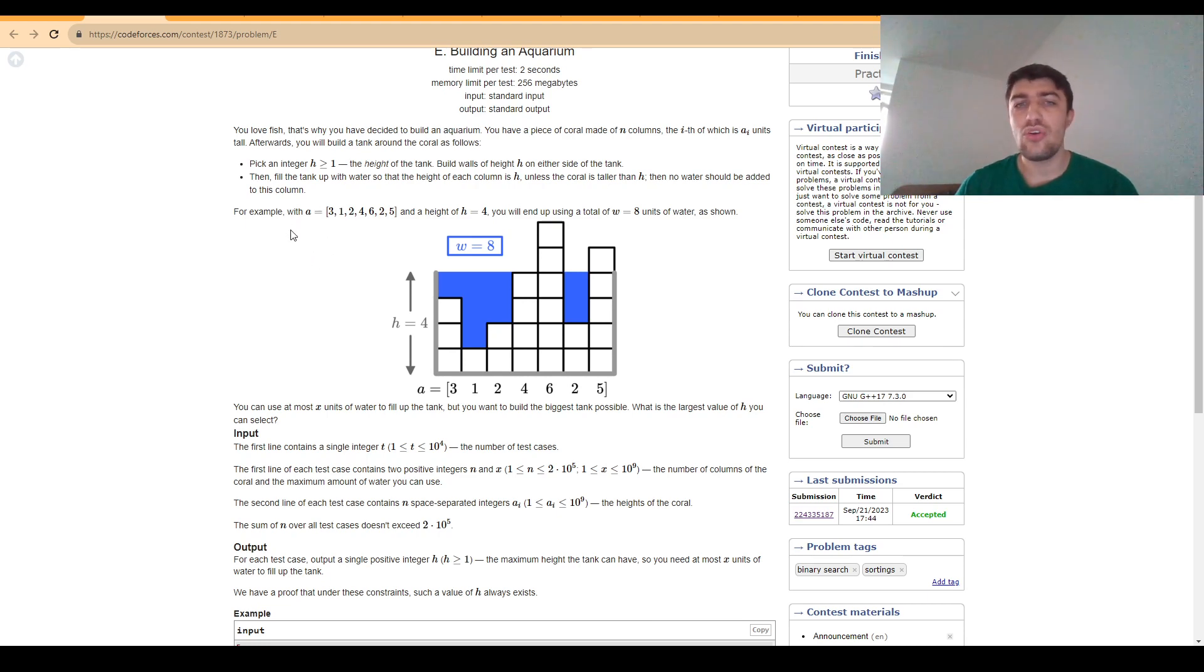Because on one hand it's easy to implement and on the other hand we can check for each possible value of the answer if the amount of water we have at our disposal is enough to make everything be at least equal to the height we want to search for.